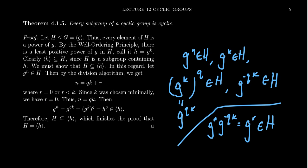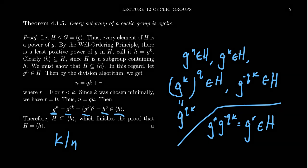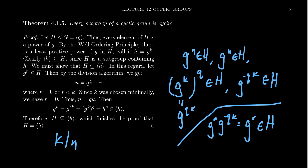So we get r equals zero. If r equals zero, that means that n equals q times k. That is, n is a multiple of k. K divides n in this situation. So g to the n equals g to the qk, which is just g to the k to the q, which is h to the q, which would belong to the cyclic subgroup generated by h. So this does show that the subgroup H is contained inside of the cyclic subgroup generated by h, thus proving equality.